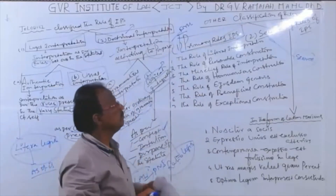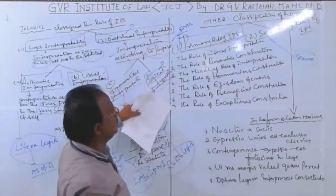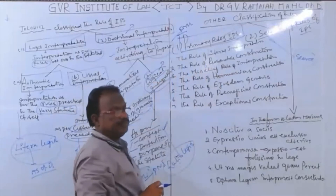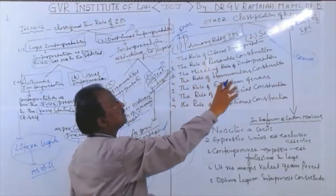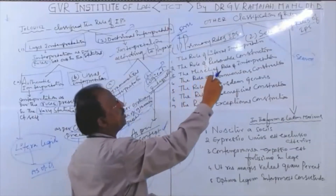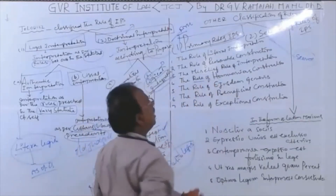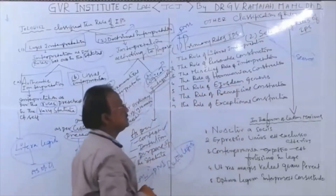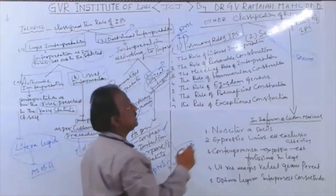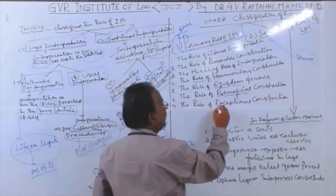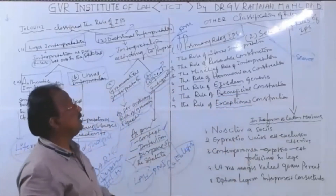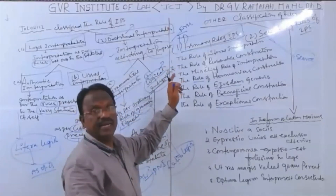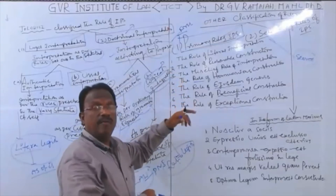The primary rules of interpretation contain seven principles. These will be explained in separate videos, as each rule has its own importance and requires elaborate discussion. In this video, only a brief idea is given — each rule will be explained widely in future videos.